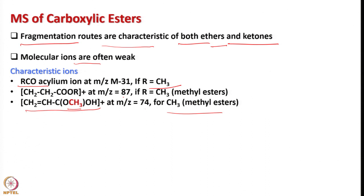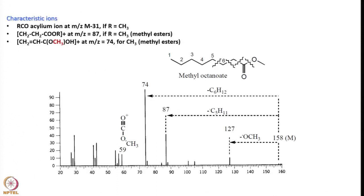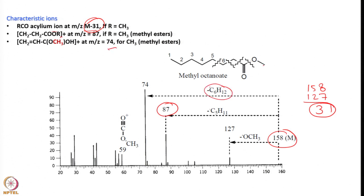For methyl esters, the acylium ion or the m/z 74 species is characteristic. Looking at methyl octanoate, RCO gives M−31; you can see 58 here and 158 is the parent. The peak at 127 arises from loss of 31. Acylium ion formation is observed, and loss of C5H11 gives the peak at 87. The peak at 74 corresponds to the methoxy McLafferty fragment, and loss of C6H12 gives another peak. At 59 one can also identify the relevant species. Work out the remaining fragments to practice interpretation.